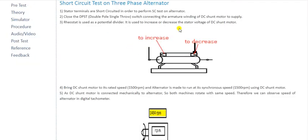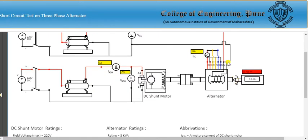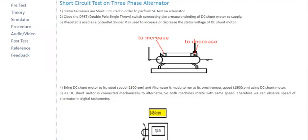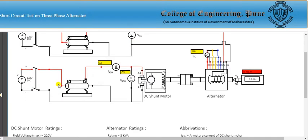In the procedure, the stator terminals are first short-circuited to perform the short circuit test on the alternator. These stator terminals are already short-circuited. Then close the DPST (double pole single throw) switch connecting the armature winding of the DC shunt motor to the supply. This DC shunt motor is the prime mover and is already coupled to the alternator shaft.